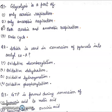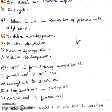Answer will be three, both aerobic and anaerobic respiration. Second, which is used in conversion of pyruvate to acetyl coenzyme A? Oxidative decarboxylation, oxidative dehydration, oxidative hydrogenation, or oxidative phosphorylation? Answer will be first, oxidative decarboxylation. It is also known as link reaction.